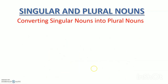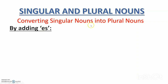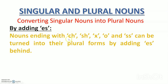Now we learn how to convert singular nouns into plural nouns. Converting singular nouns into plural nouns involves some rules. We'll start by learning the rules for adding ES. We can turn a singular noun into a plural noun by adding ES behind. Nouns ending with CH, SH, X, O, and SS can be turned into their plural forms by adding ES behind.